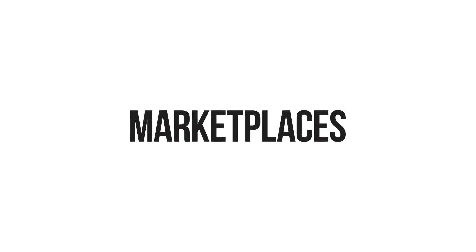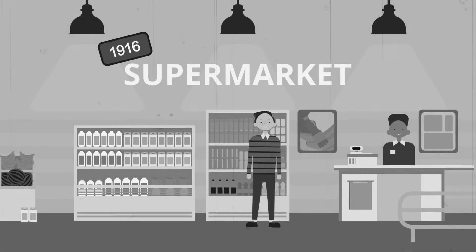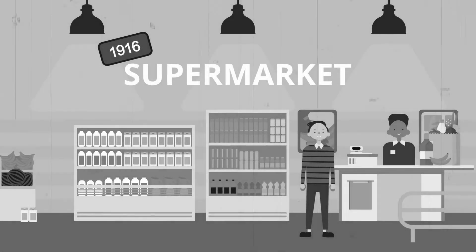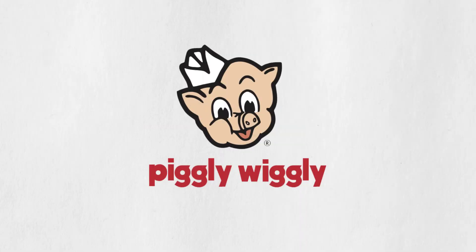Let's think about marketplaces for a moment. Before 1916, a shopper would enter a store, tell the shopkeeper what they wanted, and then the shopkeeper would gather up the items and return to the front with an order. So what changed the game for everyone in the US was a store called Piggly Wiggly, who disrupted the model with the distributed locations of self-serve grocery stores.